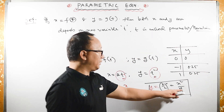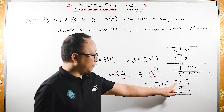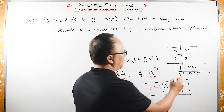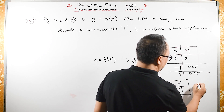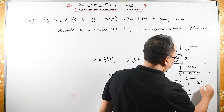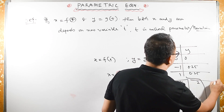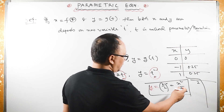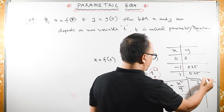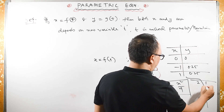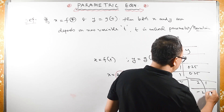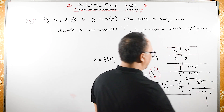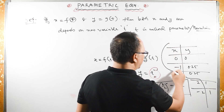What about x equals 2? 2 squared over 4 equals 4 over 4, which equals 1. So when x equals 2, y becomes 1. When x equals minus 2, y also becomes 1. Let us now plot these points.